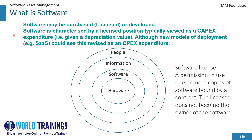About software — what is software? A software license is a permission to use one or more copies of software bound by a contract. The licensee does not become the owner of the software, meaning whoever has purchased the software is the licensee and they do not usually own the software unless it is sold that way to them. Software may be either purchased, meaning licensed, from a software vendor or manufacturer, or it may be developed in-house. If it is developed in-house, it is still needed to track the software assets, though there may be no specific licensing obligations.